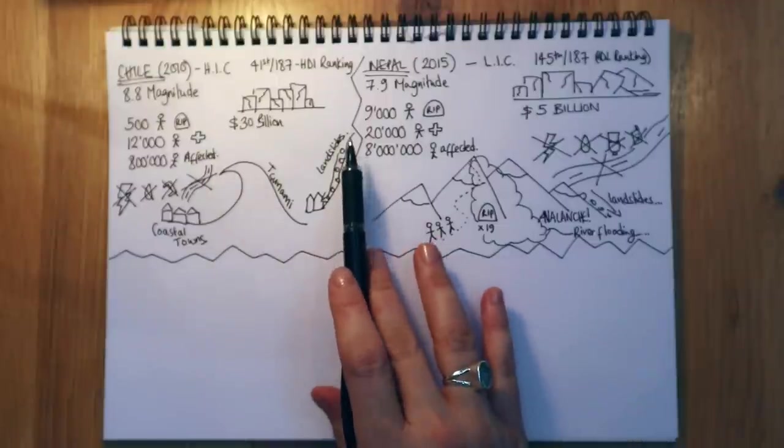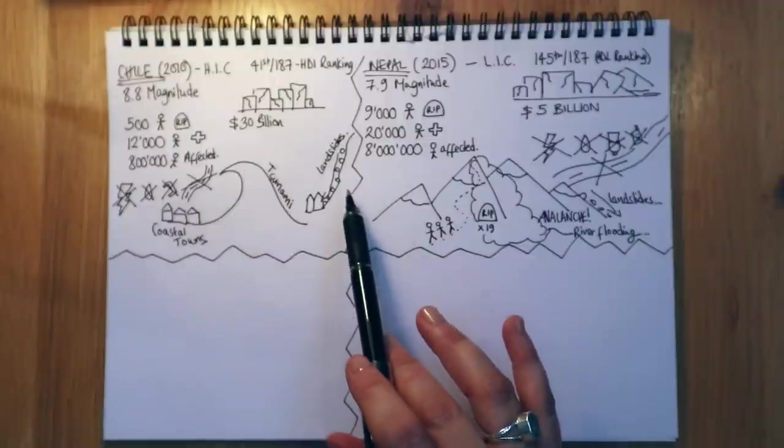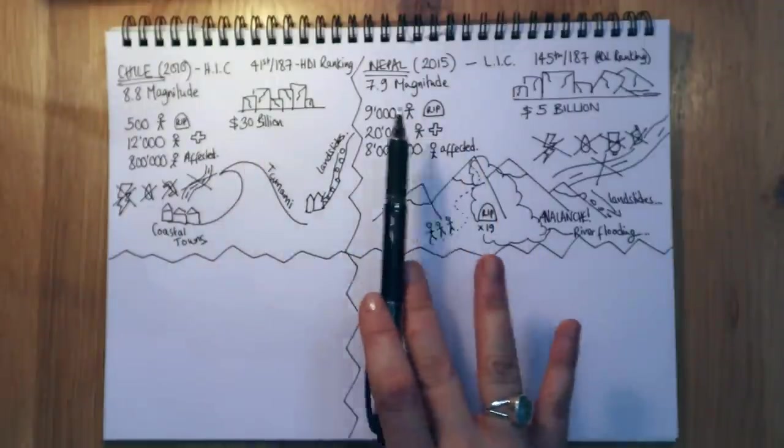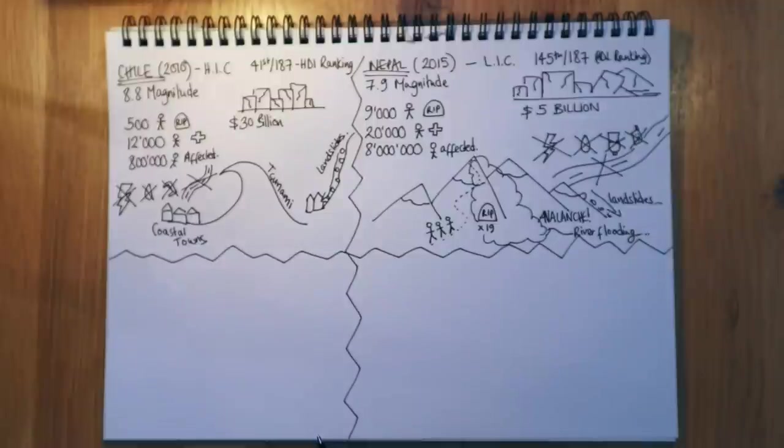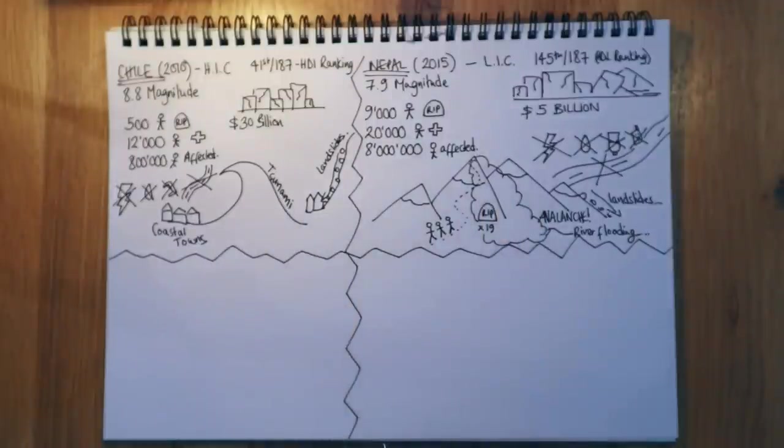And you could easily have a nine mark question that asks you to compare and contrast two different wealth areas and how they are able to respond or how they are impacted by a natural hazard.